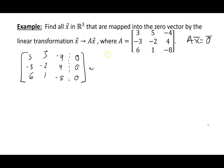So if I go ahead and perform some row reduction operations here, this is row equivalent to 3, 5, negative 4, 0, 3, 0, 0, negative 9, 0, augmented with zeros.